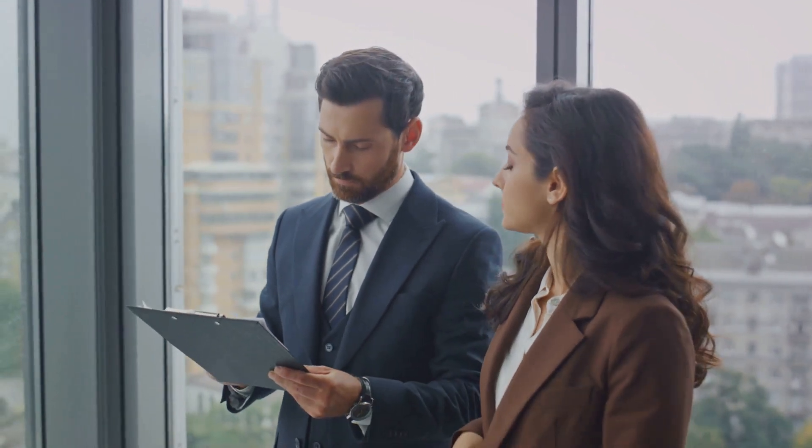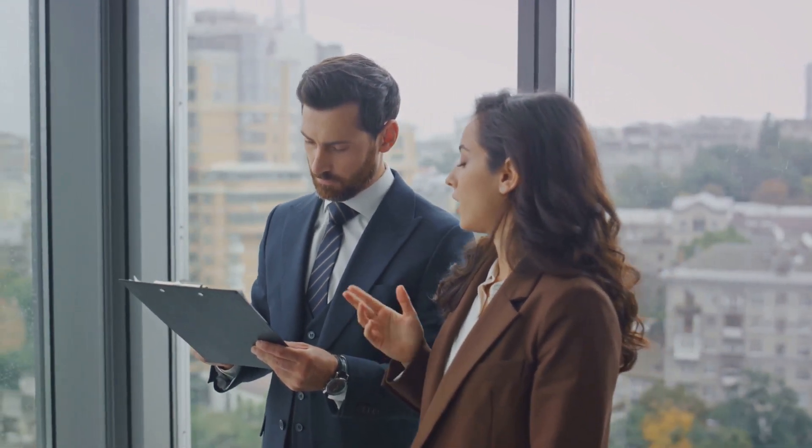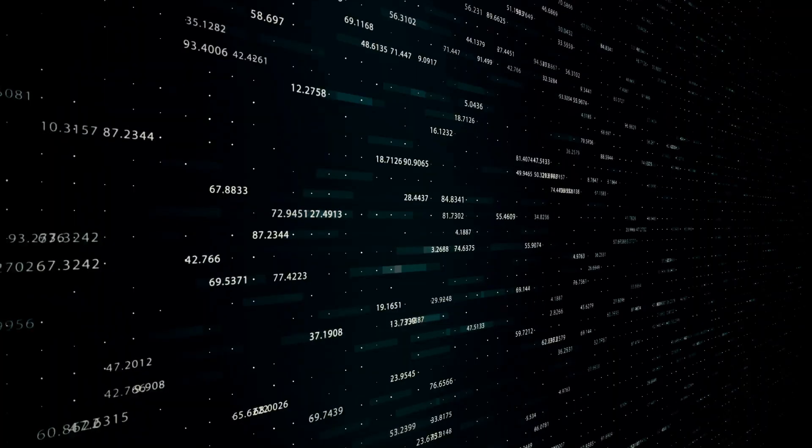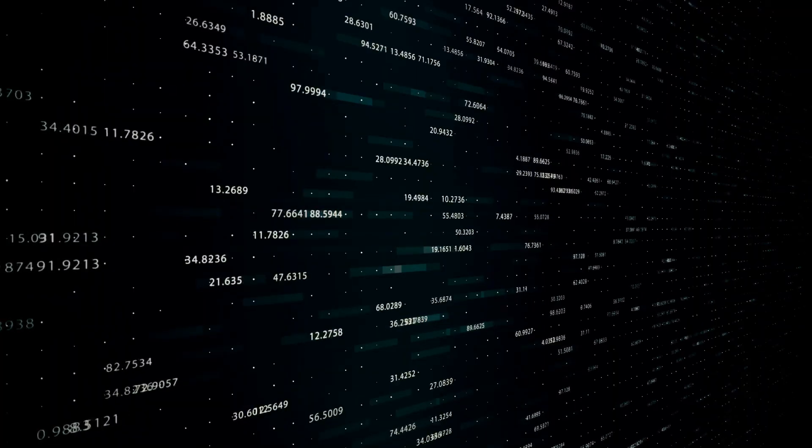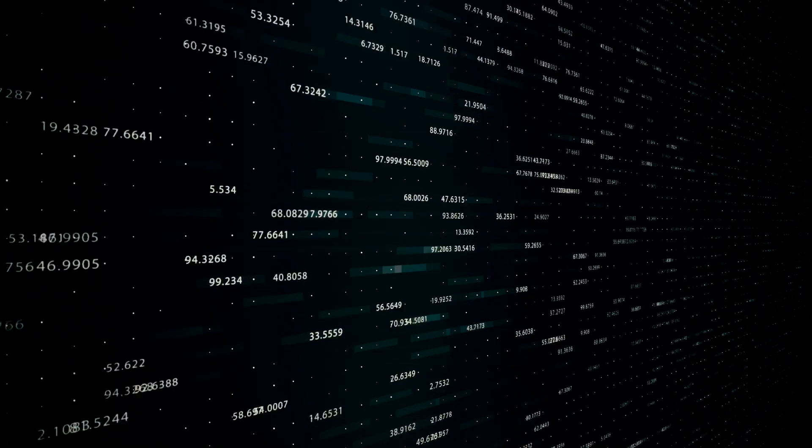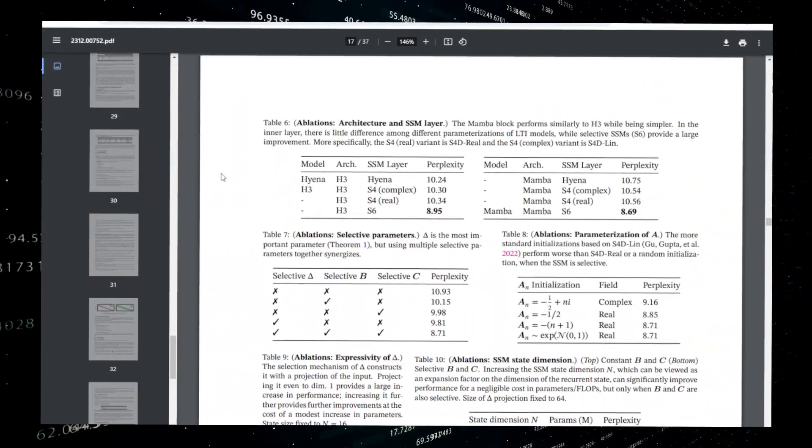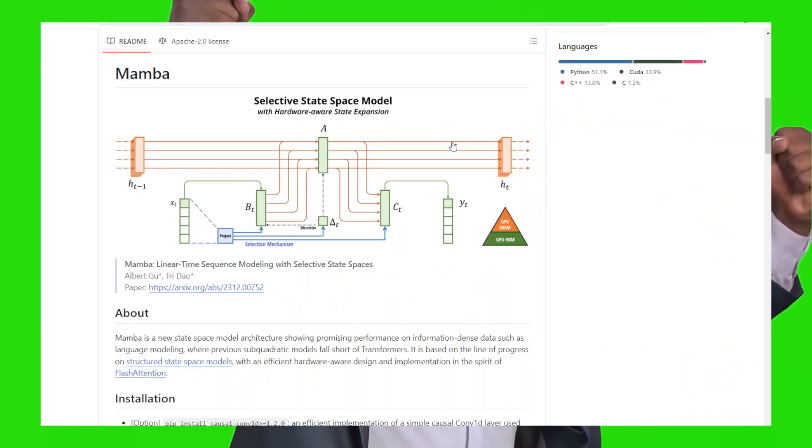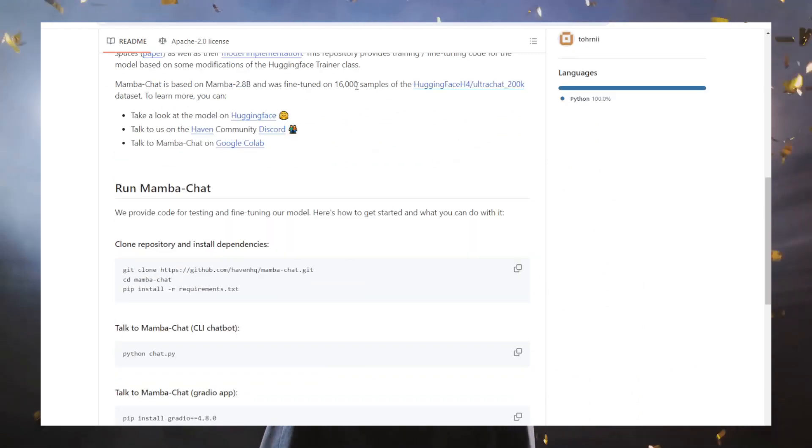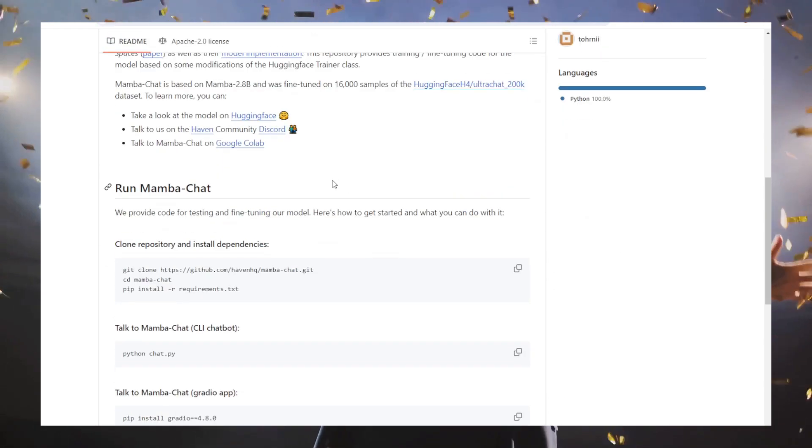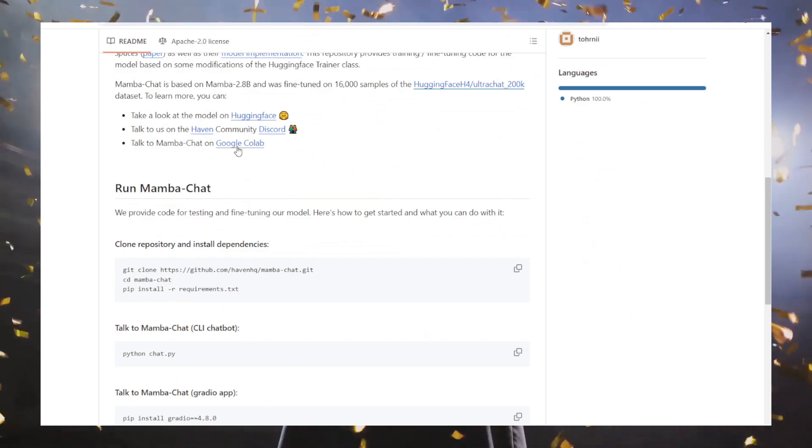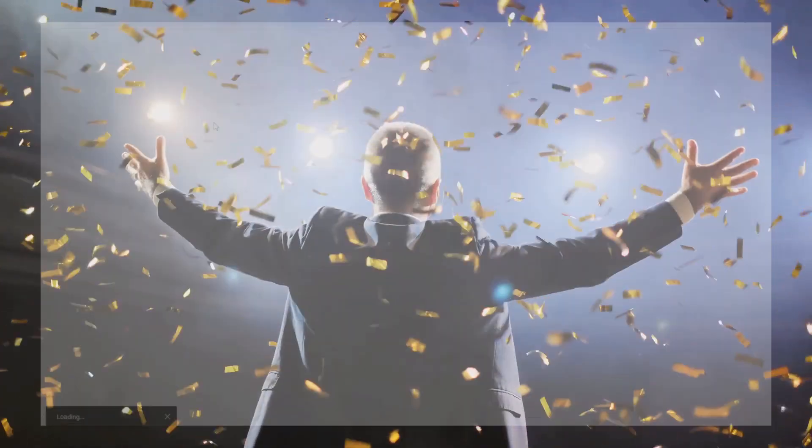Mamba, with its robust architecture, provides a solid foundation upon which LLMs can thrive. By harnessing Mamba's computational power, LLMs are able to perform tasks at an unprecedented speed and scale. This is a game changer in the world of technology, where speed and scale are often the difference between success and failure.